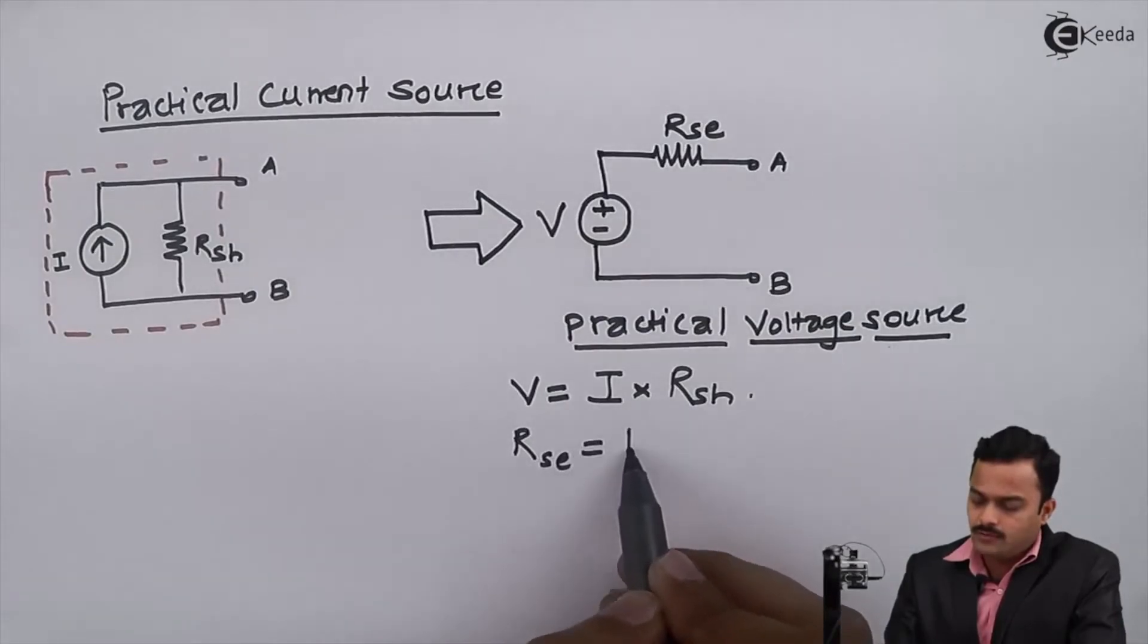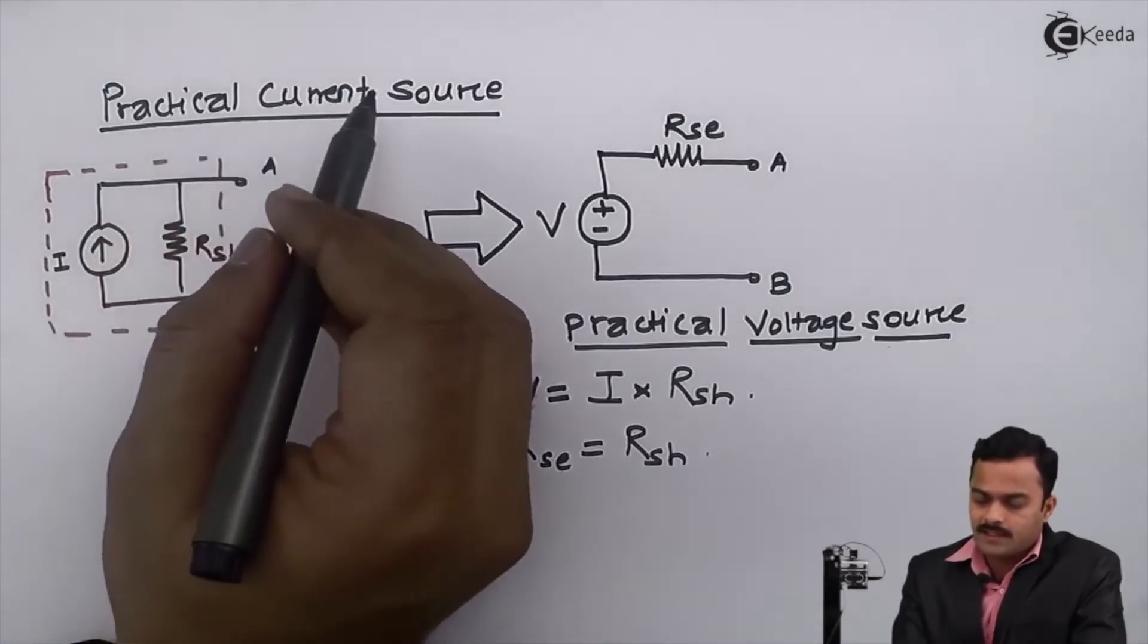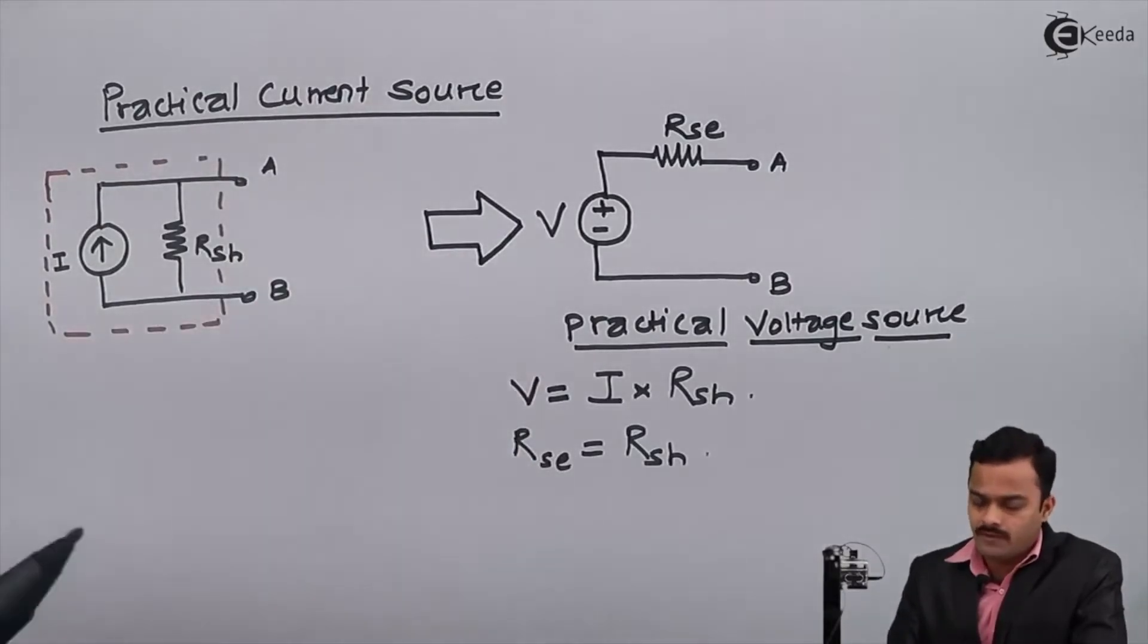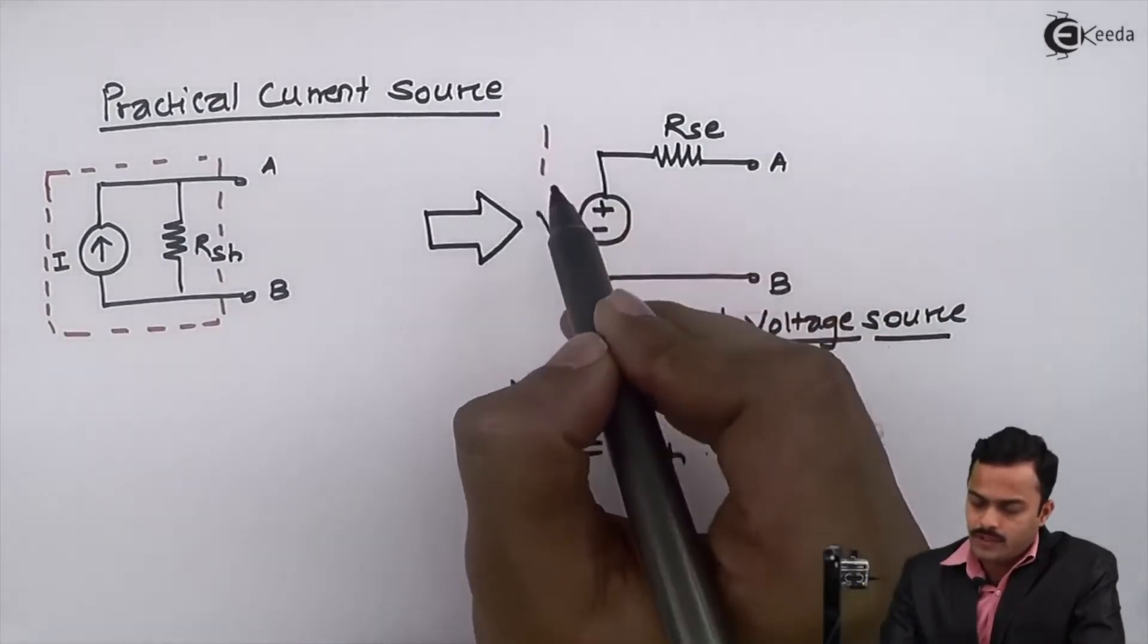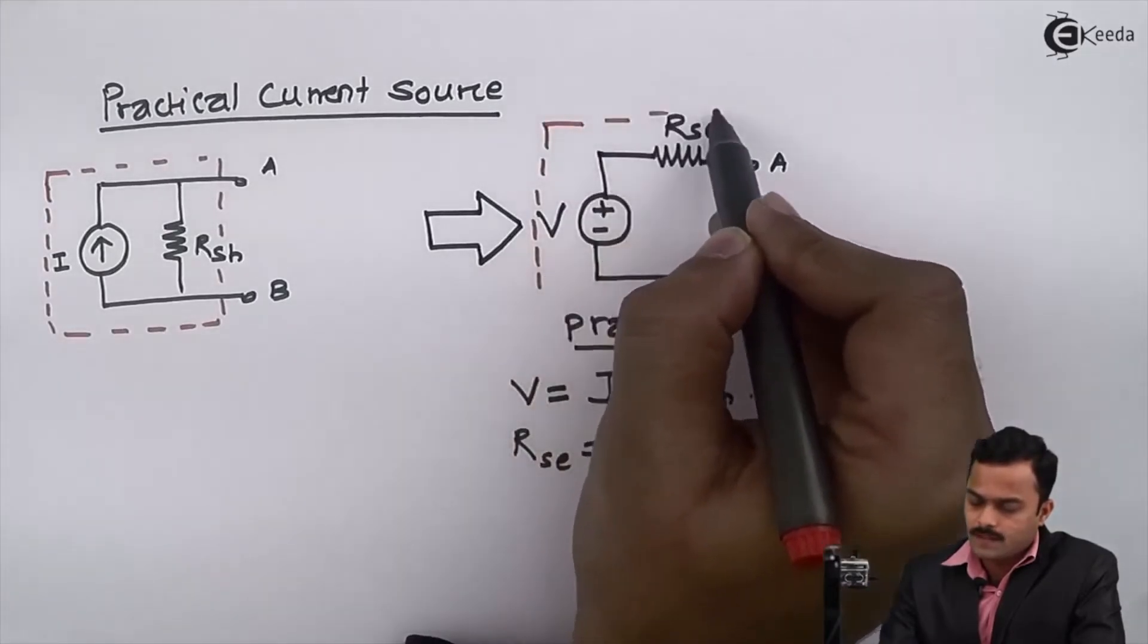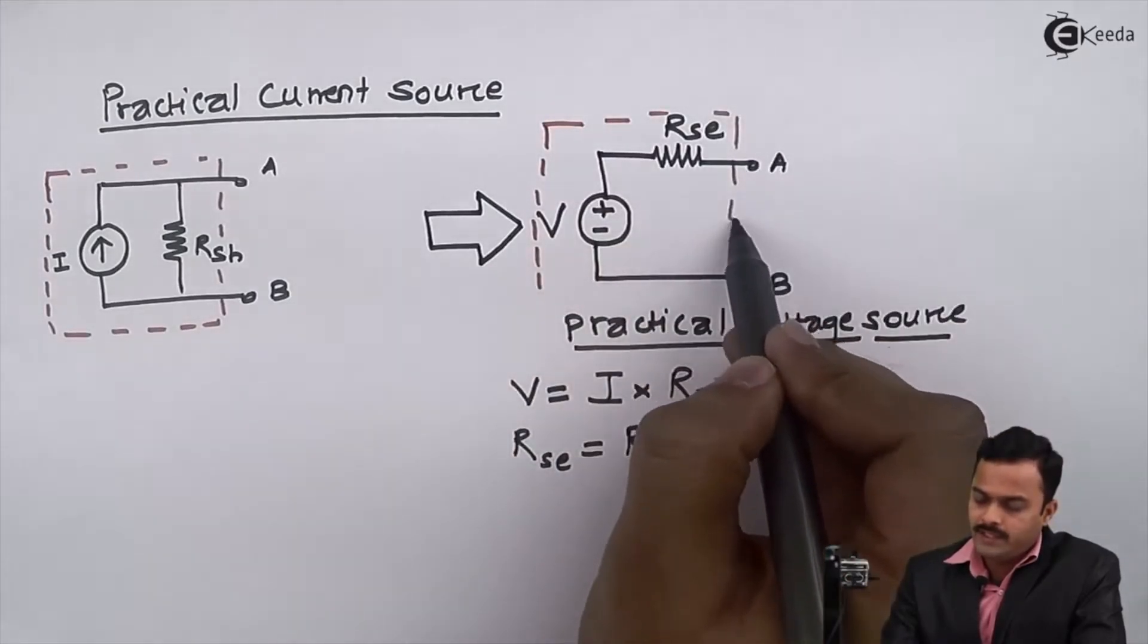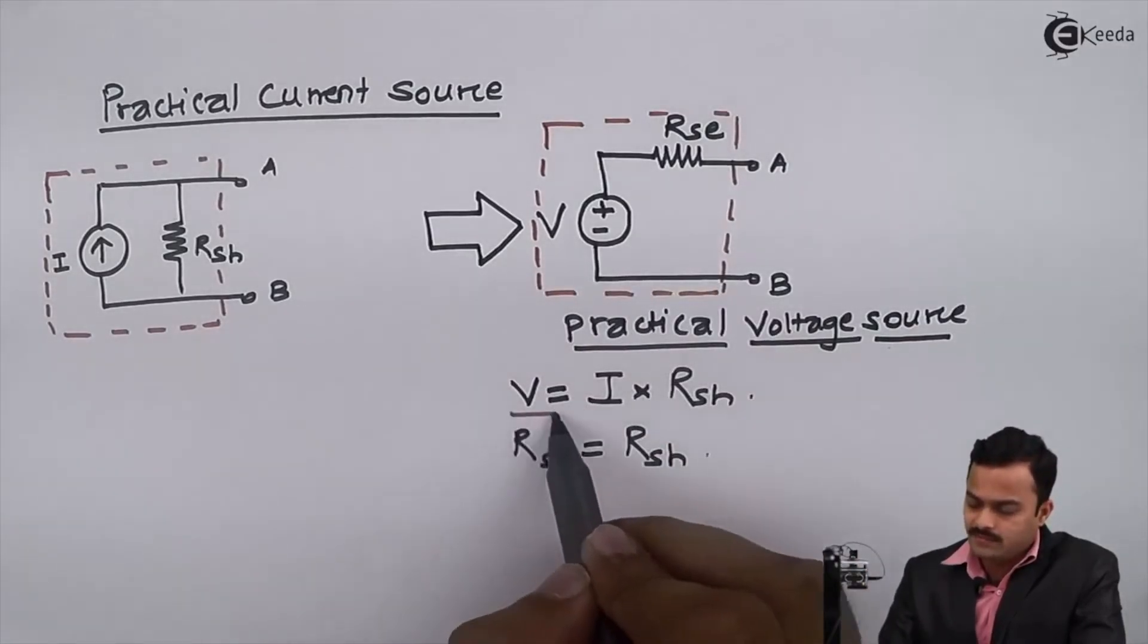So any practical current source is given having the value I and RSH can be converted into equivalent practical voltage source having the value V and RSE, and the relationships are: V equals I into RSH and RSE is same as RSH.